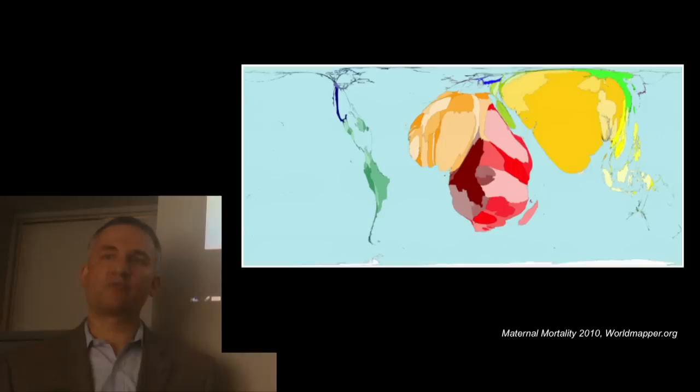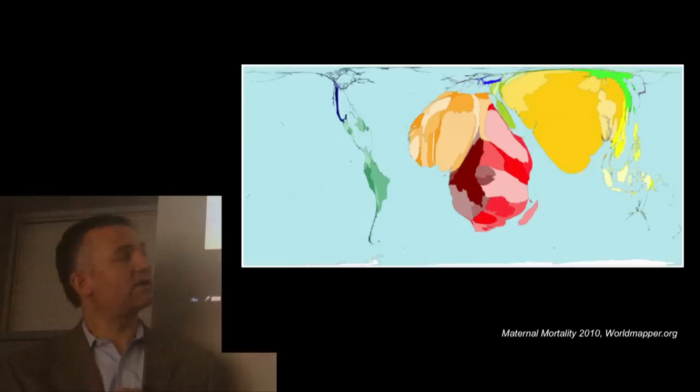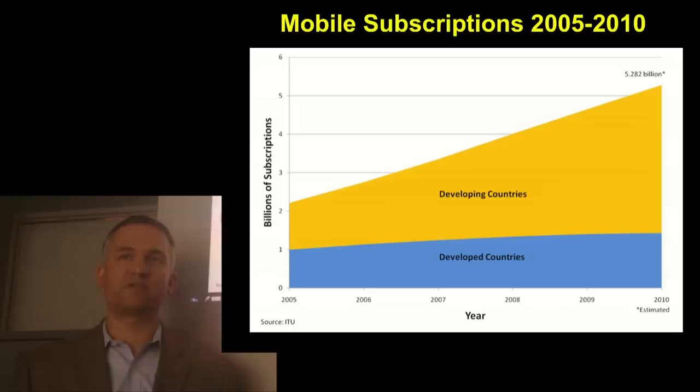As a public health practitioner, this is often the way we see the world. This is a map whose boundaries have been inflated based on the relative burden of maternal and neonatal mortality that those countries experience. We often find ourselves working in these very countries of sub-Saharan Africa and South Asia to try to alleviate some of these burdens experienced by those populations.